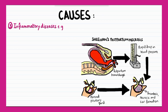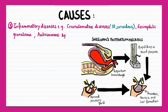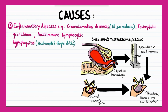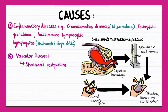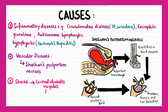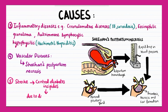Inflammatory diseases can lead to hypopituitarism. These include granulomatous diseases such as sarcoidosis and TB, eosinophilic granulomas, and autoimmune lymphocytic hypophysitis, which is pituitary dysfunction associated with autoimmune diseases such as Hashimoto's thyroiditis. Vascular diseases such as Sheehan's postpartum necrosis may also induce the state. Additionally, stroke can cause central diabetes insipidus due to damage of the hypothalamus and/or the posterior pituitary.